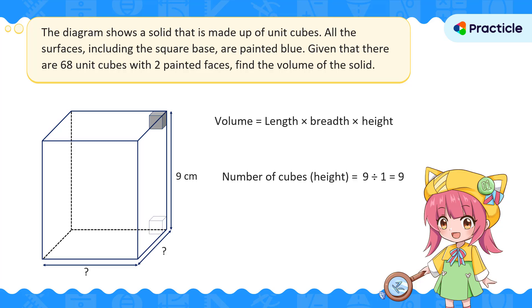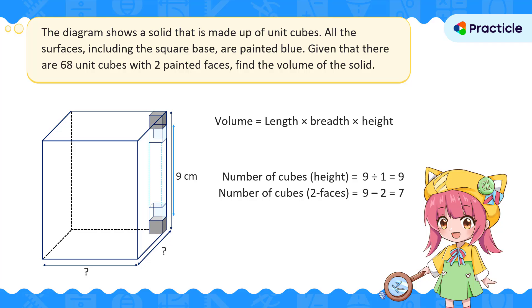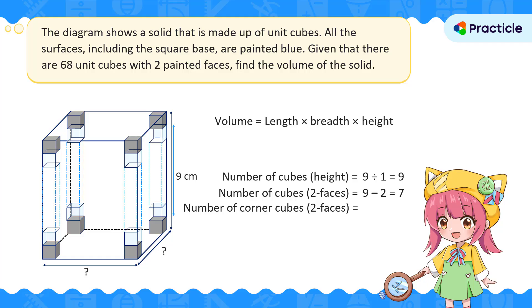What about the cube at the bottom? The side, the back, and the bottom of that cube will be painted — also three painted faces, so it's not counted either. Now let's look at the cubes in between. Using one as an example, when we paint all the surfaces of the cuboid, only its side and back will be painted — that's two painted faces. There are 9 minus 2 equals 7 such cubes between the top and bottom on each vertical edge. This is the same for all four corners.